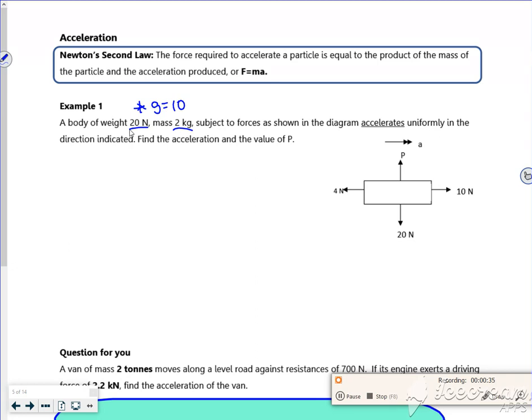Right then, so what do we know? What can we do first? So let's do horizontally. So F equals MA. The direction of travel, which is that way, minus any forces opposing it, which is that way, is equal to mass times acceleration.